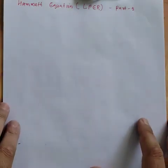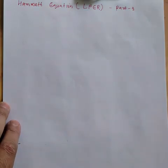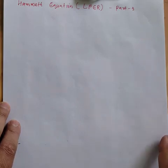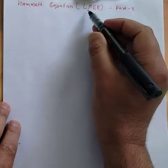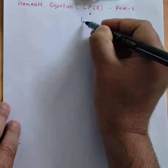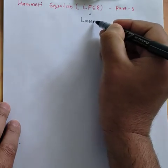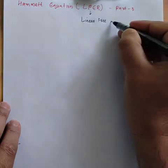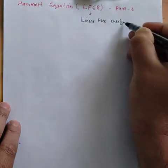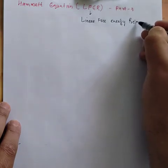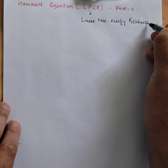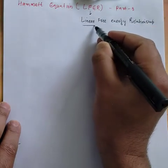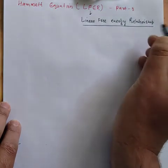Bismillahirrahmanirrahim. Dear students, today we will see the Hammett equation Part 3, and it will be to the point. We have already discussed Part 1 and Part 2, but today I will be focusing on the point that the Hammett equation is called a linear free energy relationship — so you can see here: linear free energy relationship.